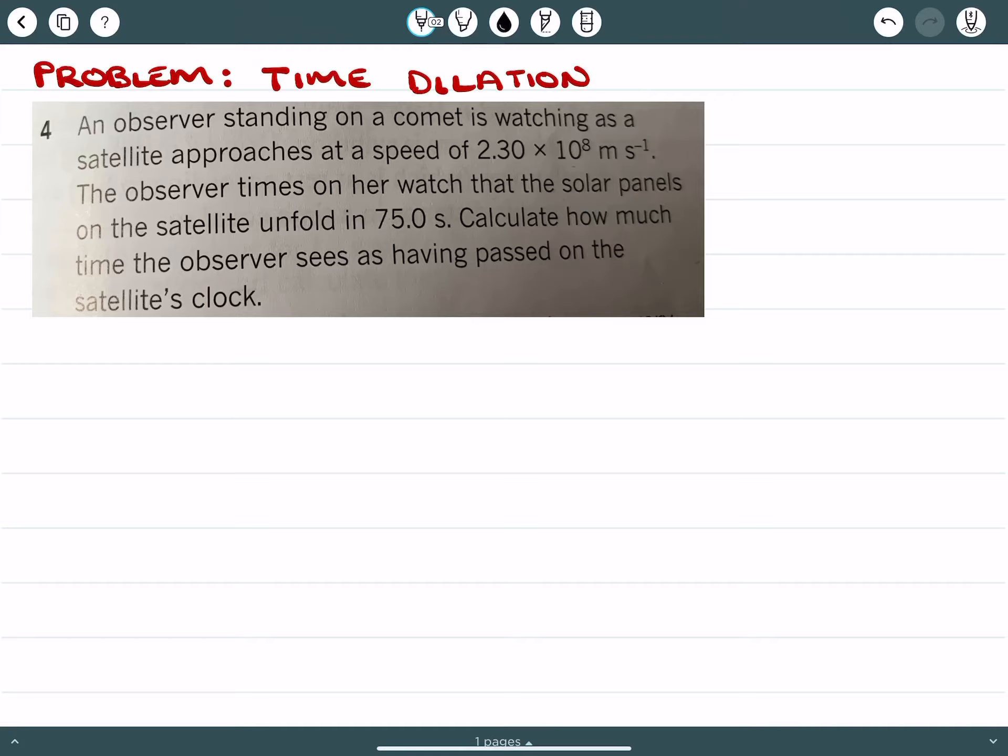The observer times on her watch that the solar panels on the satellite unfold in 75 seconds. Calculate how much time the observer sees as having passed on the satellite clock.